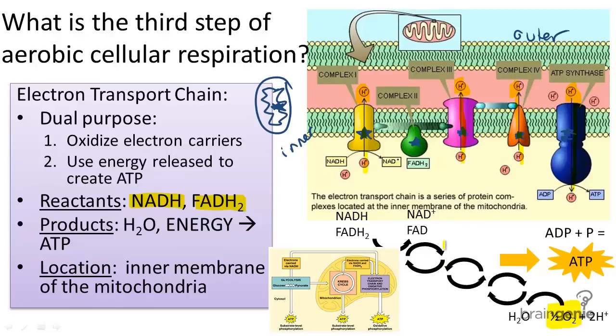For every NADH that enters the electron transport, three ATP are created, and two ATP are created for every FADH2 that enters the chain. A total net of 28 ATP are produced in electron transport.